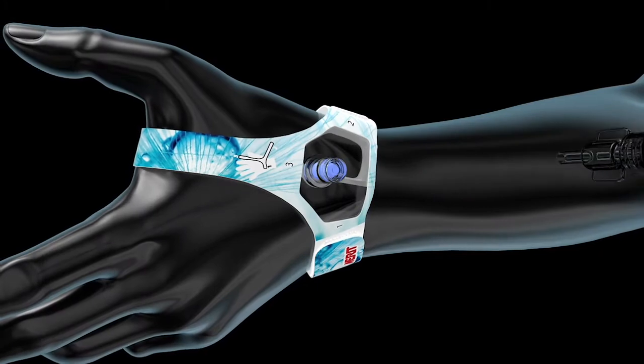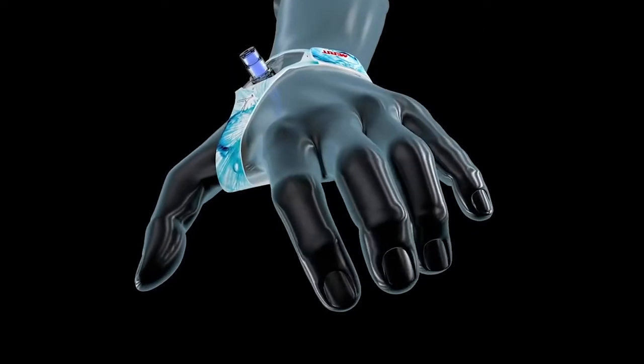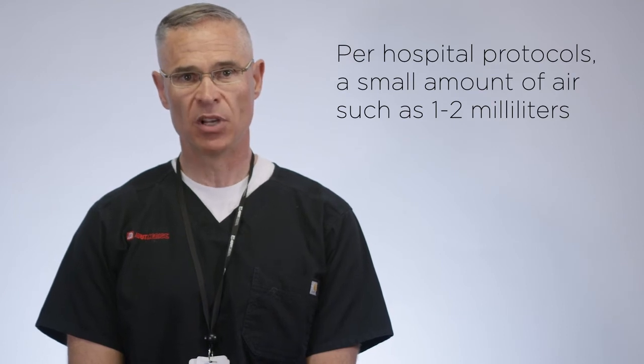The patient should be able to move their hand or wrist freely without any bleeding. Per hospital protocol, a small amount of air can be removed every 15 minutes until hemostasis is achieved. Ensure a negative is not pulled on the balloon. Complete hemostasis time may differ according to patient's condition, anticoagulant dosage, and size of puncture site.